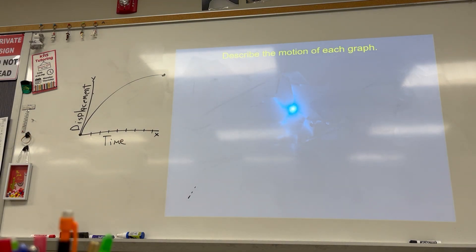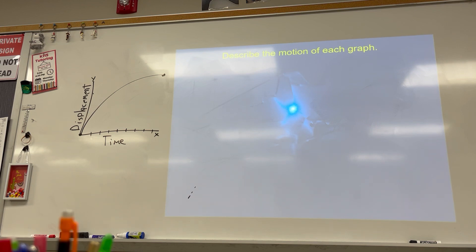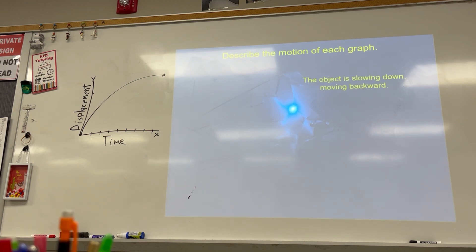What combination do we need next? We're going to do all the combinations. We've done forward speeding up, forward slowing down, forward constant speed, and backward constant speed. We need to go backwards again — backwards speeding up and slowing down. So let's do backwards slowing down.